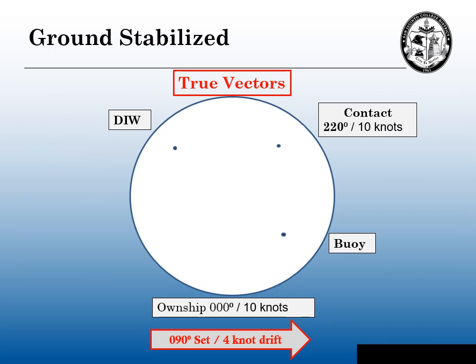Ground stabilized ARPAs — you will not see this on a plotting sheet. We're still going 000 degrees at 10 knots, contact going 220 at 10 knots, a contact dead in the water, and a buoy attached to the seabed. We still have a 090 degree set at four knots, using true vectors. This time, our own ship going due north will be affected by the easterly current — we'll be set off to the east. The contact going 220 degrees will now be heading maybe 210 or 215 degrees, and it'll be a little shorter because they're bucking the current — maybe 8 or 9 knots.